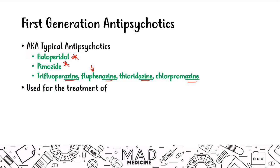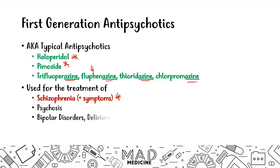These drugs are used for the treatment of many disorders, primarily schizophrenia — especially the positive symptoms — which is most likely what you'll see on Step 1. They can also be used for psychosis in general, whether drug-induced or otherwise, as well as bipolar disorder, delirium, Tourette's, Huntington's disease, and OCD. For example, haloperidol can be used to treat delirium in a hospitalized patient.